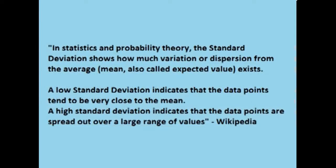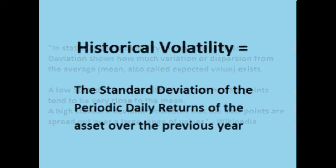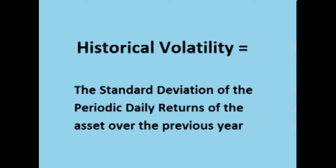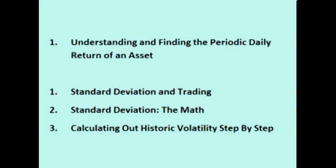Historic volatility refers to the standard deviation of the periodic daily returns. The standard deviation shows the rate of dispersion, or how spread out the periodic daily returns are from the average of all the periodic daily returns. In short, historic volatility is the standard deviation of the periodic daily returns over a one-year period. For more on this, please watch my video on the periodic daily return and my three-video series on the standard deviation.